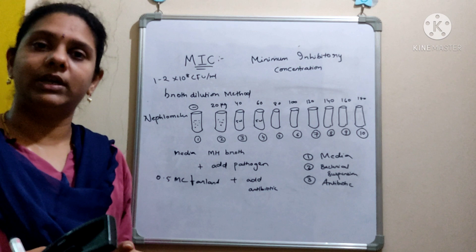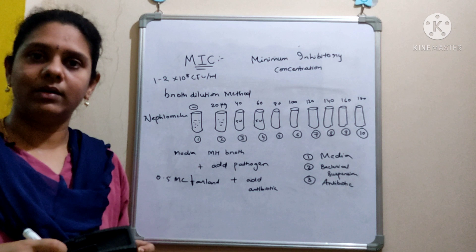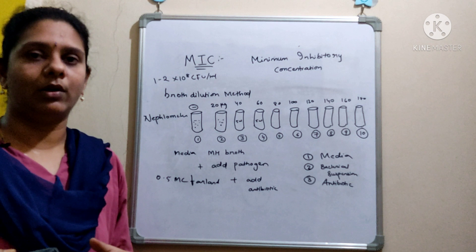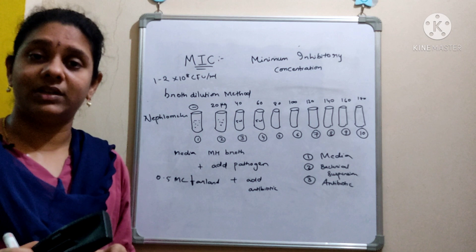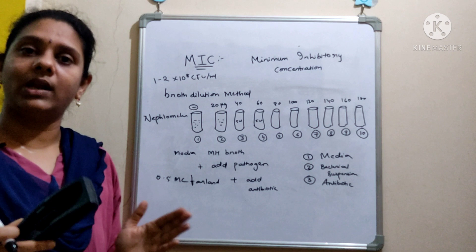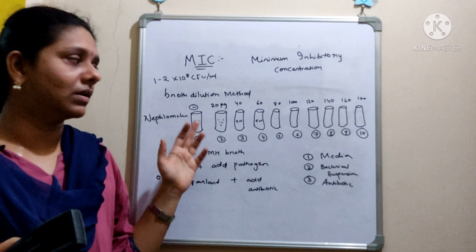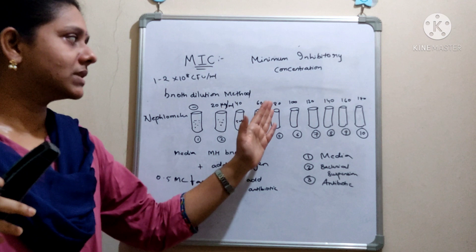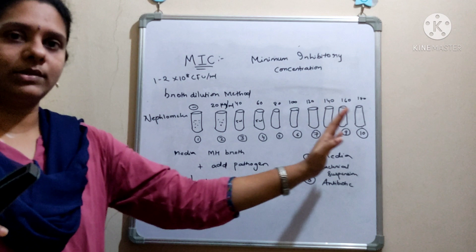For preparation of the antibiotic solution, take the powdered drug and dissolve it in sterile distilled water. For example, to get 1 mg/mL concentration, take 10 mg of the drug and dissolve in 10 mL of sterile distilled water. Do not sterilize the solution after adding the antibiotic — sterilize the distilled water first, then use it. From a stock of 1 mg/mL, dilute to 20 µg/mL, then 40, 60, up to 200 µg/mL.